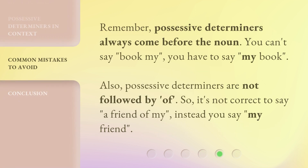Remember, possessive determiners always come before the noun. You can't say 'book my' — you have to say 'my book.' Also, possessive determiners are not followed by 'of.' So it's not correct to say 'a friend of my.' Instead, you say 'my friend.'